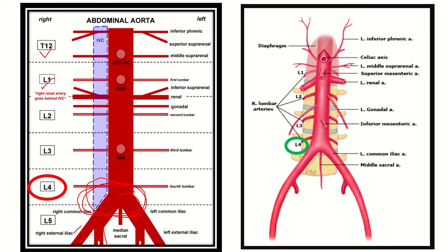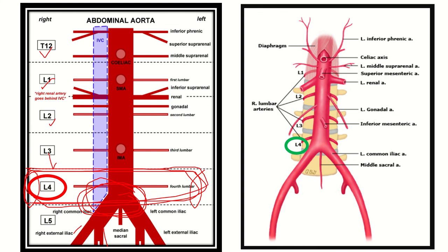We can see the vertebral levels: thoracic, then number one, two, three — and at this point it is the number four level. We can see this boundary — this is the lumbar four level boundary — so the abdominal aorta bifurcates at the level of the lumbar four vertebra.